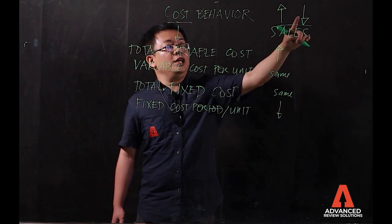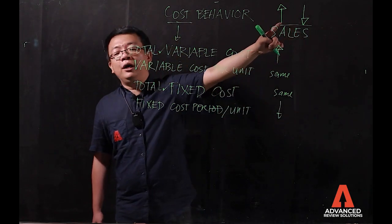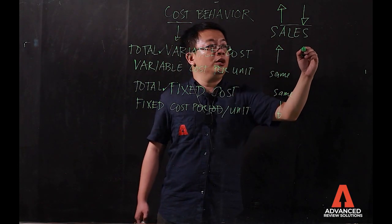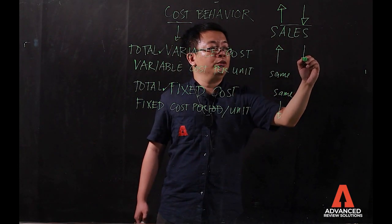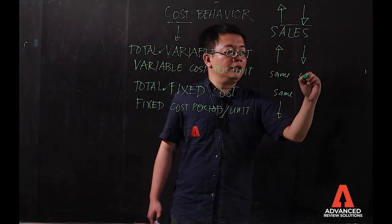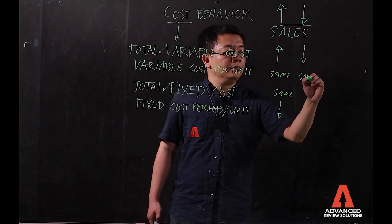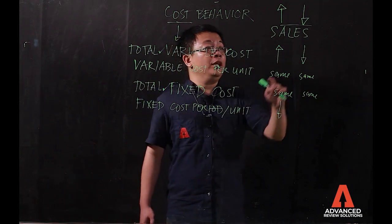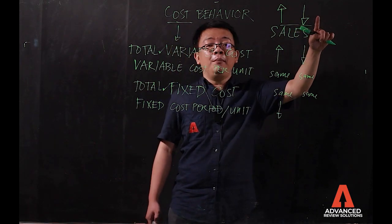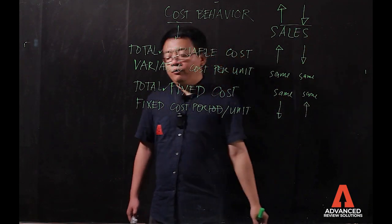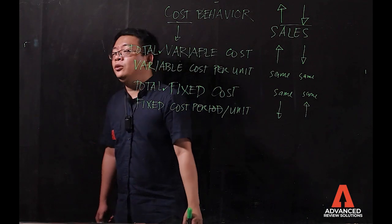How about if your sales will go down? Variable cost total will also go down. How about the variable cost per unit? Same. How about your fixed cost per unit? If sales go down, fixed cost per unit will increase (tataas ang ating fixed cost per unit).